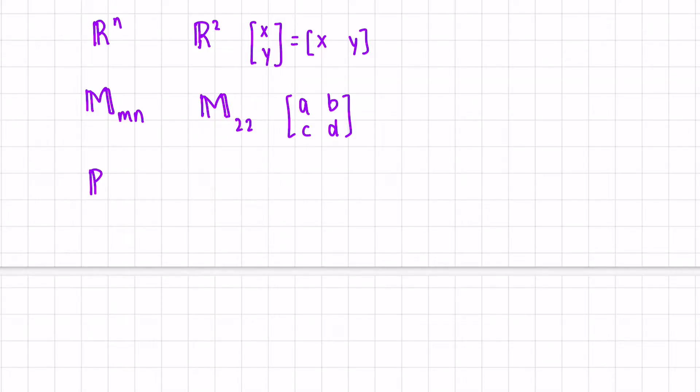P is the set of all polynomials. If you want to be more specific, a subspace within P is P_n, which means all polynomials with a degree at most n. So this is what it would look like. P of x equals, let's say, a_0 plus a_1 x plus a_2 x squared plus all the way up to a_n x^n, where the a's are coefficients.